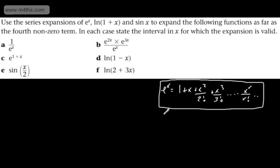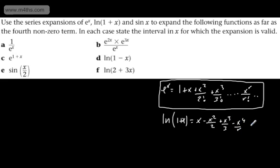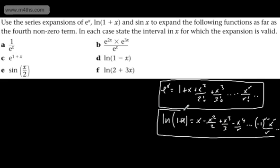If we look now at the natural log of 1 plus x, this gives us x minus x squared over 2 plus x cubed over 3 minus x to the fourth over 4, and so on, up to minus 1 to the r minus 1 times x to the r over r. And that is only valid for x strictly greater than minus 1 and less than or equal to positive 1.